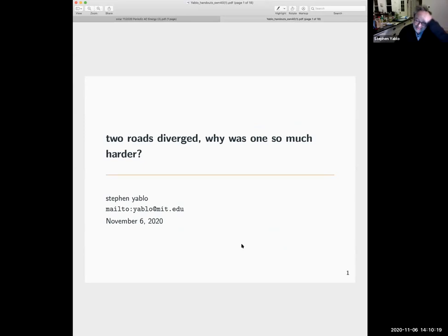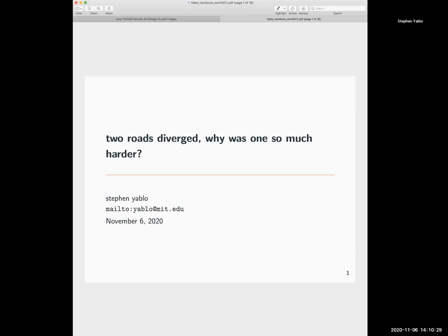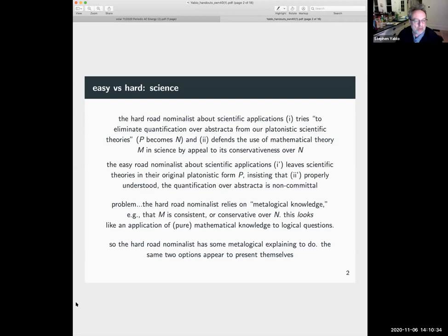We're in business. All right, so the hard road nominalist about scientific applications tries to eliminate quantification over abstracta from our Platonistic scientific theories. So we've got the Platonistic theory, it becomes the nominalistic theory M, and defends the use of mathematical theory M in science by appeal to its conservativeness over the nominalistic theory.